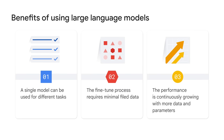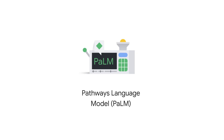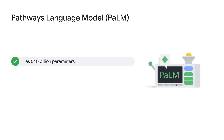Third, the performance of large language models is continuously growing when you add more data and parameters. Let's take PaLM as an example. In April 2022, Google released PaLM, short for Pathways Language Model, a 540 billion-parameter model that achieves state-of-the-art performance across multiple language tasks. PaLM is a dense, decoder-only transformer model with 540 billion parameters. It leverages the new Pathways system, which enabled Google to efficiently train a single model across multiple TPU v4 pods. Pathways is a new AI architecture that will handle many tasks at once, learn new tasks quickly, and reflect a better understanding of the world.